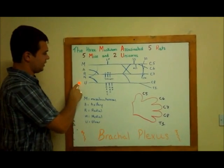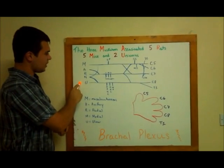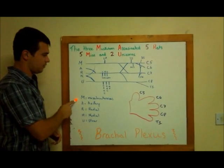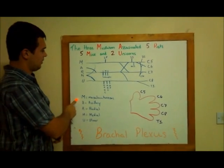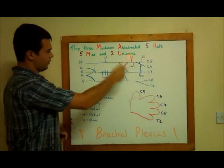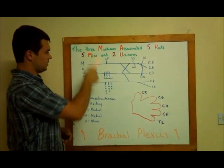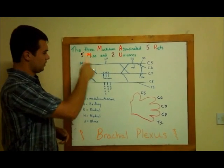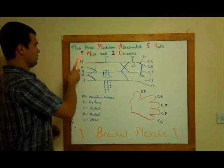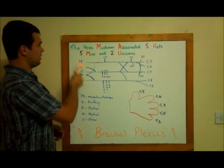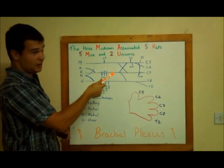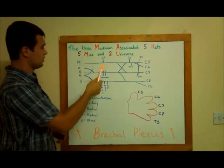The terminal endings — what they stand for — are a little bit trickier to find out where they originate from, since you have this whole network going on here. So the way you remember it is with this little mnemonic: the three musketeers assassinated five rats, five lions, and two unicorns.